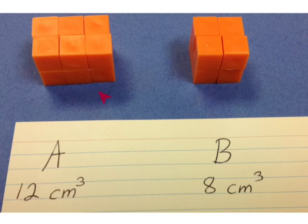Here we have two rectangular prisms. A is 3 centimeters by 2 centimeters by 2 centimeters. Its volume is 12 cubic centimeters. B is 2 centimeters by 2 centimeters by 2 centimeters. Its volume is 8 cubic centimeters.